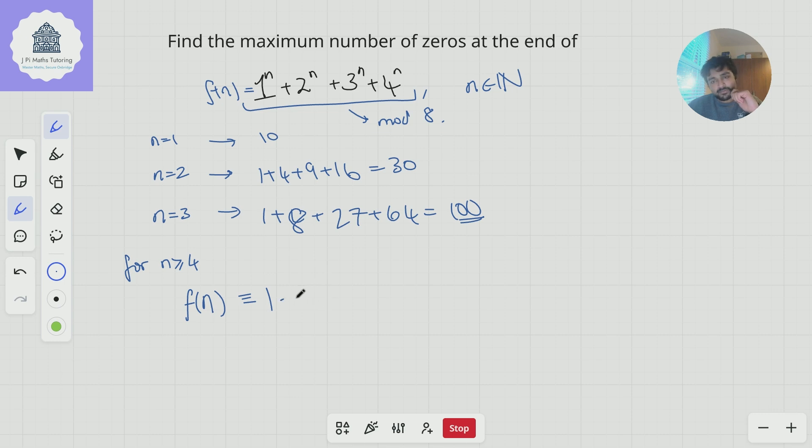Since n ≥ 4, n-4 is non-negative, so 2^(n-4) is some positive integer. Therefore 16 times it is a multiple of 16, hence 0 mod 8. So we have 1 + 0 + 3^n.